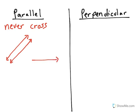You could draw parallel lines horizontally. You could draw them vertically. It doesn't matter as long as the two lines are going in the same direction so that they never cross.